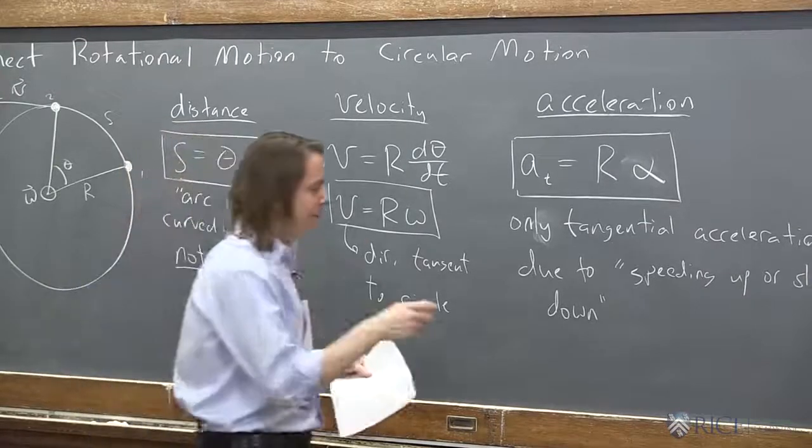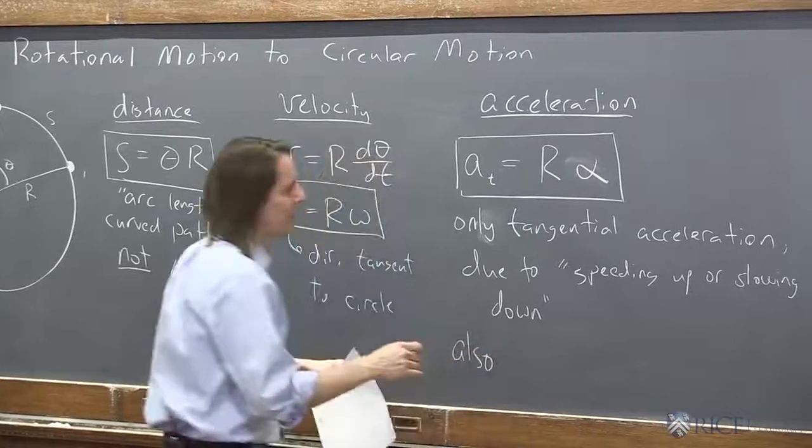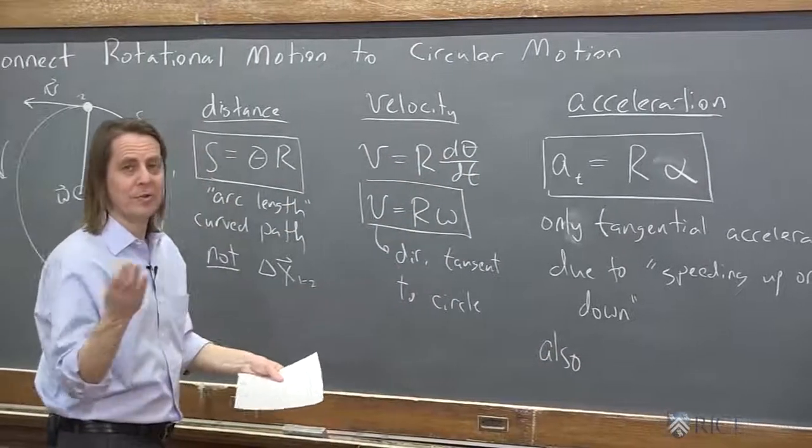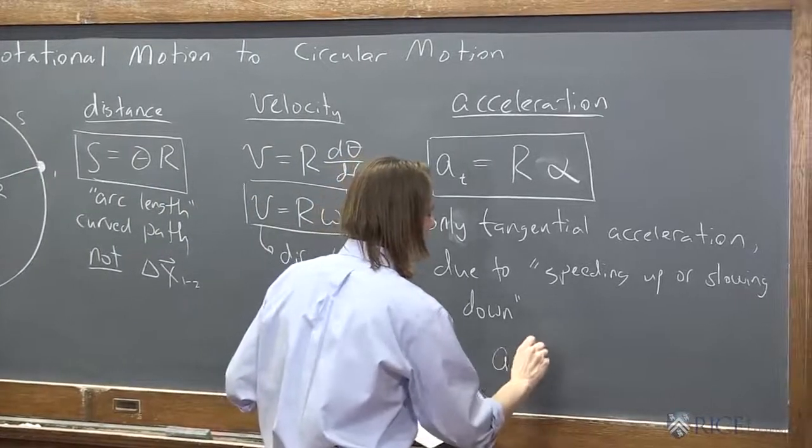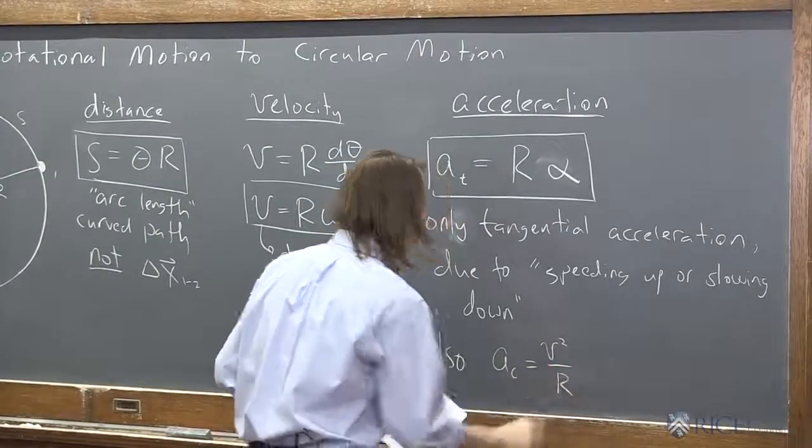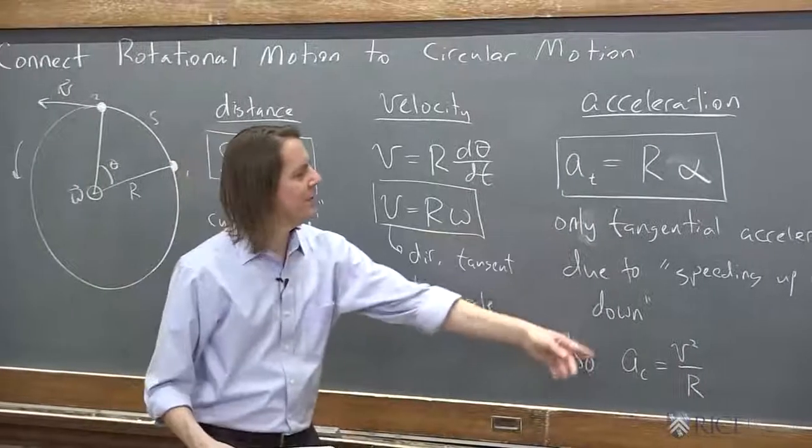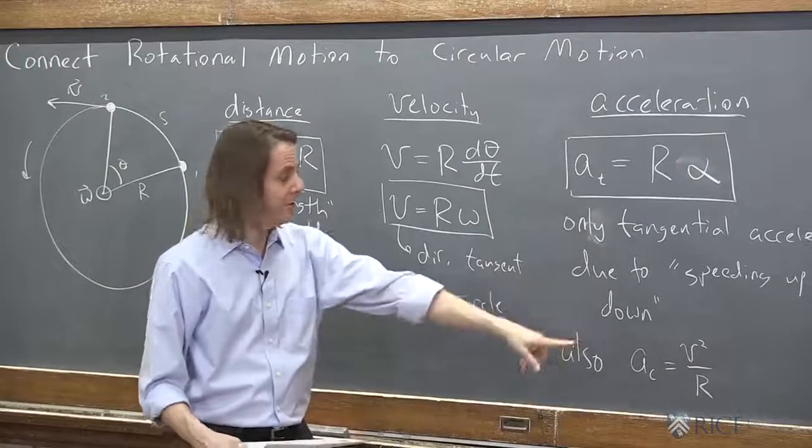But you want to remember that there's also that other kind of, when we're thinking about circular motion, there was also the centripetal acceleration. So remember that there was ac is the speed squared over R. So this isn't replacing this. It's just another component. This is still true.